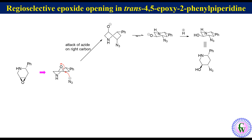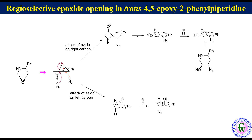Attack of azide on the left side carbon allows the left carbon to move down and the right carbon to move up, leading to the formation of an azido-alkoxide in a chair conformation, which after protonation gives the product in chair conformation.